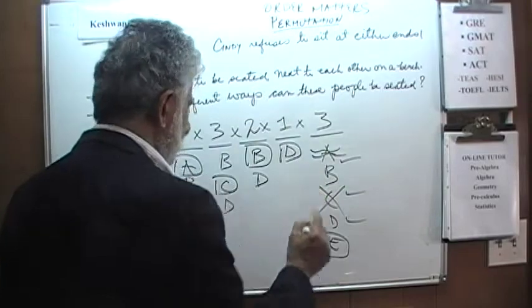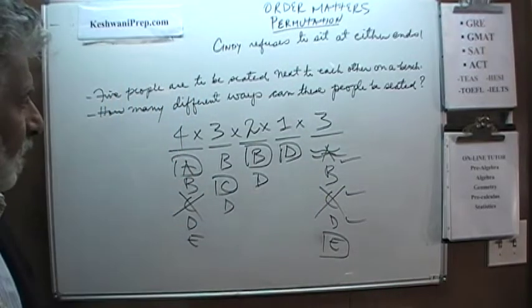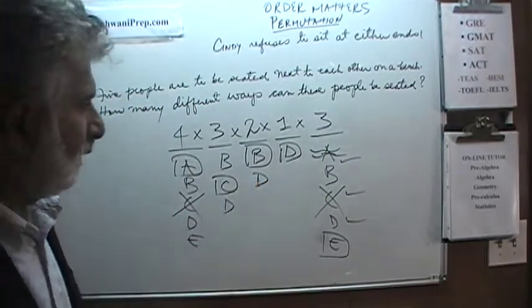That is what there is. Four times three times two times one times three. Four times three is twelve. Two times three is six. Six times twelve is seventy-two.